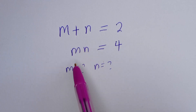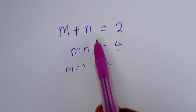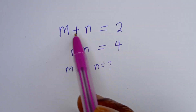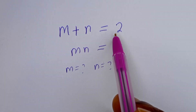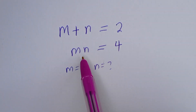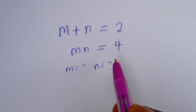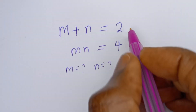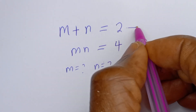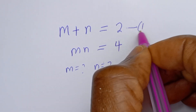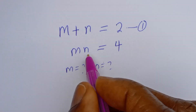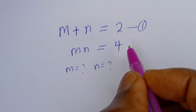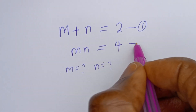Hello, how to solve for m and n in this equation? m plus n is equal to 2, and m n is equal to 4. Let's call m plus n equals 2 equation 1, and m n equals 4 equation 2.